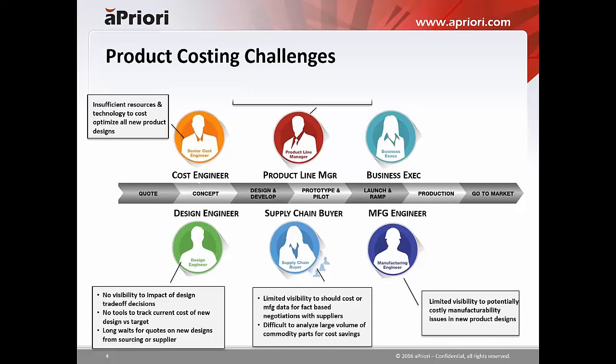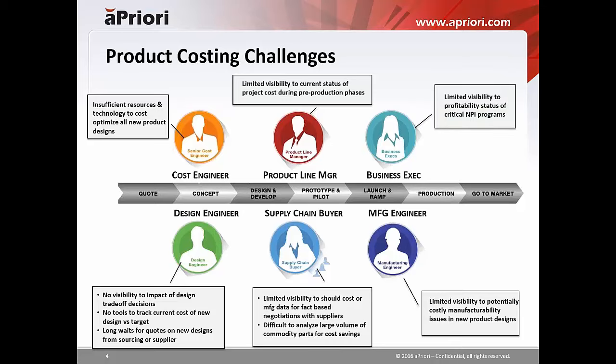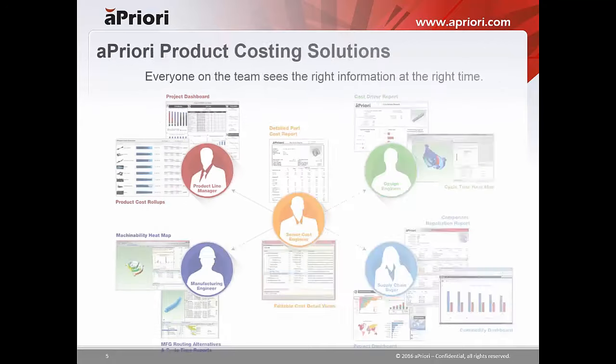Other folks involved in the process who also have an impact on product cost and profitability include manufacturing engineers, product line managers, and business executives who have very limited visibility to the profitability status of important NPI programs. Everybody in the product development process in a global manufacturer is touching cost, making decisions that impact cost, and across the board have very little visibility to the impact of their trade-off decisions. That's kind of where aPriori comes in.